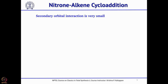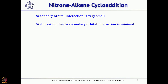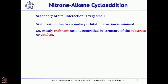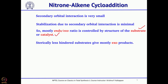This nitrone-alkene cycloaddition has been successfully used to make a 5-membered ring called isoxazolidine. But contrary to 4+2 cycloaddition — that is, the Diels-Alder reaction — the secondary orbital interaction here is not present or is very minimal. As you know, in 4+2 cycloaddition, secondary orbital interaction is important for getting the endo isomer as the major product. Since this 3+2 cycloaddition does not involve significant secondary orbital interaction, you do not necessarily get the endo product as major; in fact, you get the exo product as the major product.